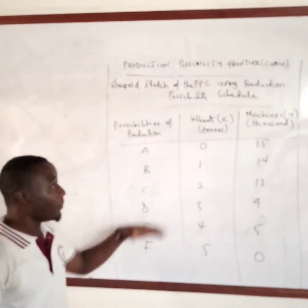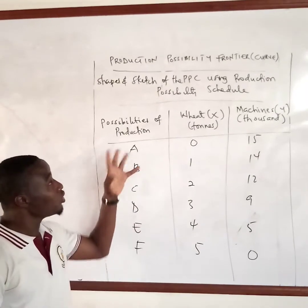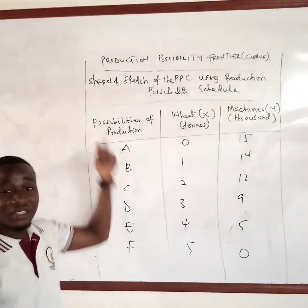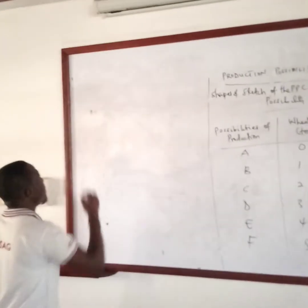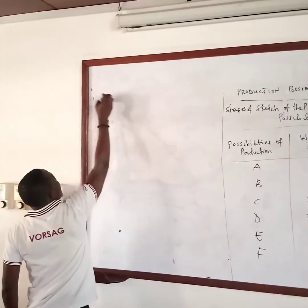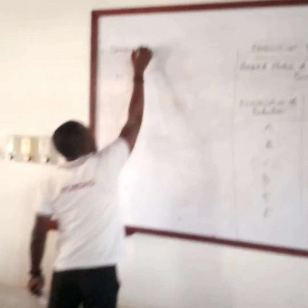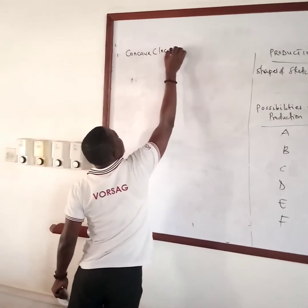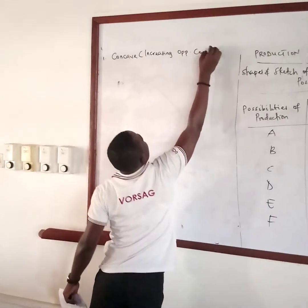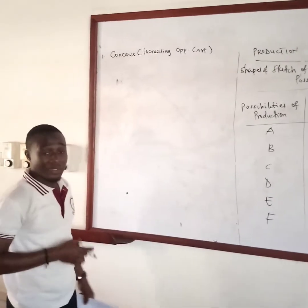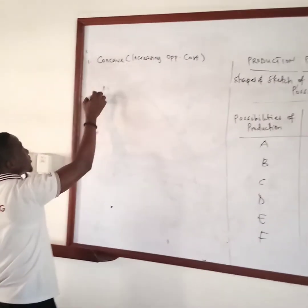If you have been given a schedule you can simply draw from it. But before we do that, we want to look at the various shapes that the PPF can carry. We have three basic shapes. The first one is the one that is concave to the origin, and it shows increasing opportunity cost. In our subsequent videos we're going to look at increasing, decreasing, and all those opportunity costs.